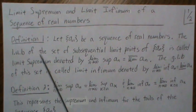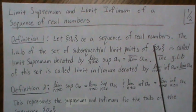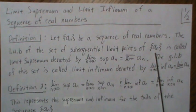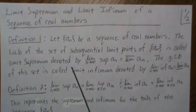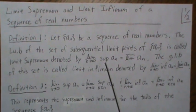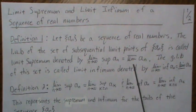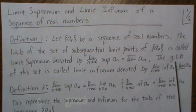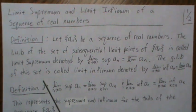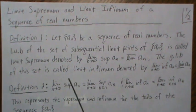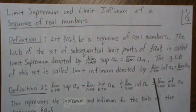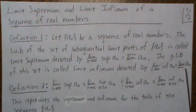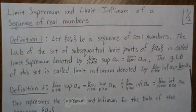First we need to let AN be a sequence of real numbers. The least upper bound of the set of sub-sequential limit points is called the limit supremum, denoted by the limit as n goes to infinity of the supremum of AN — more commonly written with a bar above the limit sign. The greatest lower bound of this set of sequential limit points is called the limit infimum, denoted by the limit as n goes to infinity of the infimum of AN, also commonly written with a bar under the limit sign.